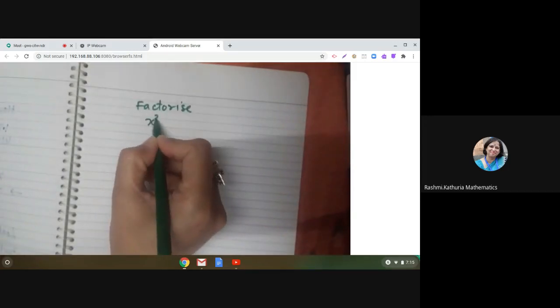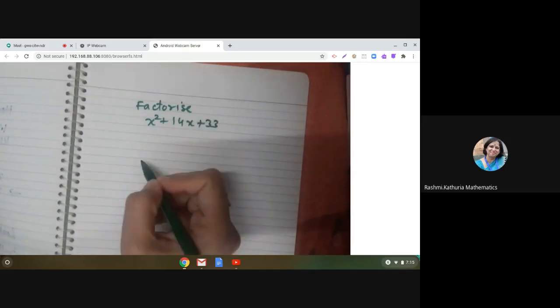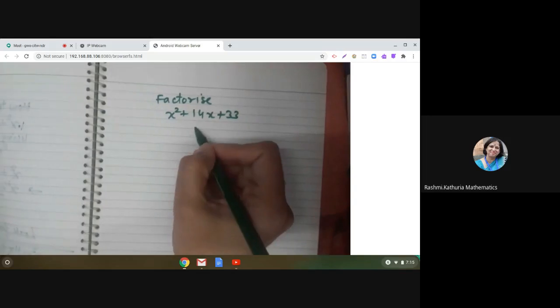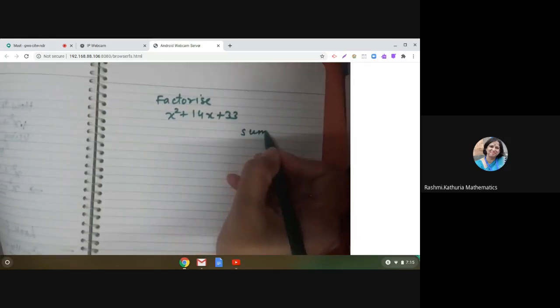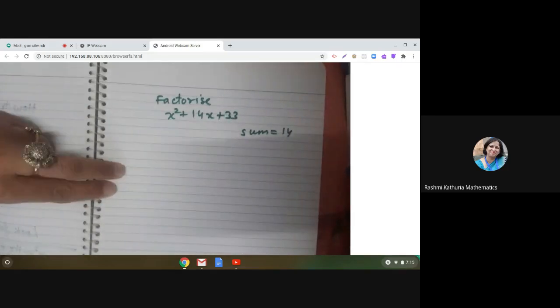x square plus 14x plus 33. Now tell me, choose two numbers whose sum is 14 and whose product is 33.